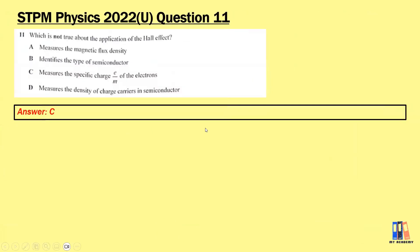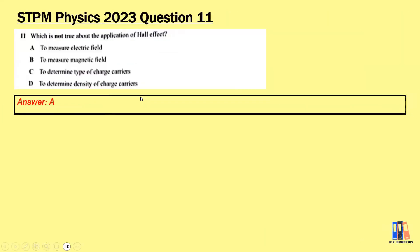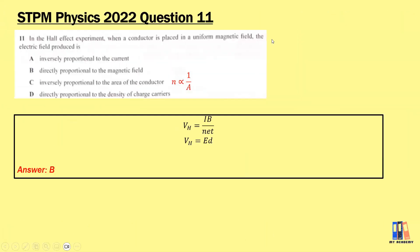For the next question, the 2022 Ulangan paper asks which statement is not true about the application of the Hall effect. The answer is C: measuring the specific charge e/m of the electron, which is done through the Thomson experiment or mass spectrometer. The Hall effect can be used to measure magnetic flux density, identify the type of semiconductor, and measure the density of charge carriers. In a similar 2023 question, the answer is that the Hall effect cannot be used to measure the electric field — don't confuse this with the fact that an electric field is produced; it is produced but not measured.